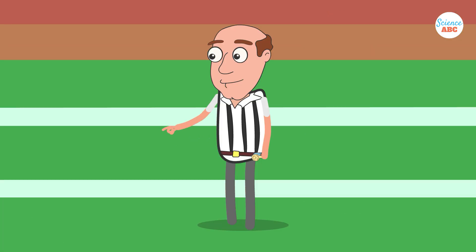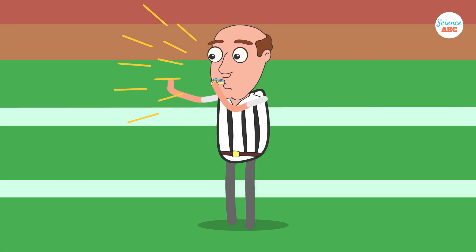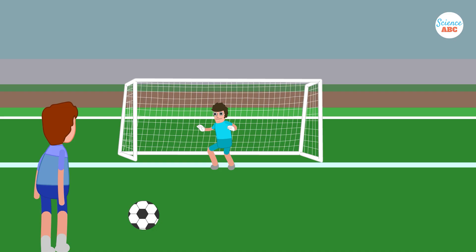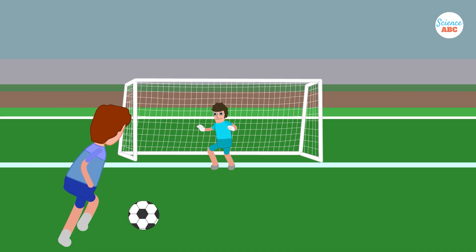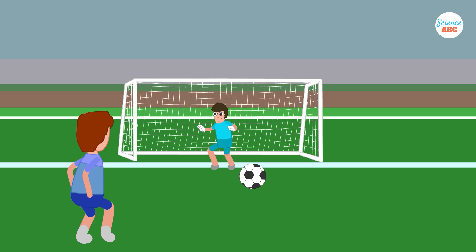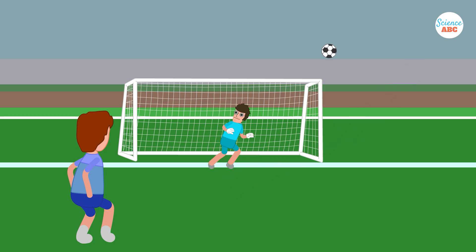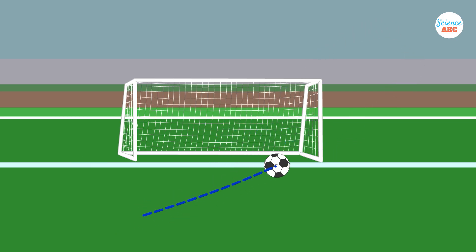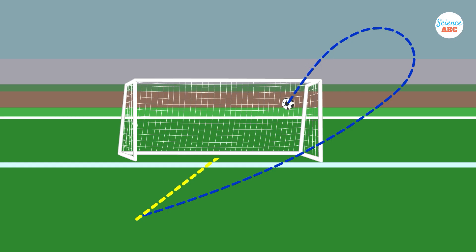Have you ever watched a penalty shootout or a free kick during a soccer match? If you closely observe the ball as a player kicks it towards the goal, you might notice that some players impart a spin to the ball. This spin causes the ball to curve through the air, instead of maintaining a straight path towards the goal post.